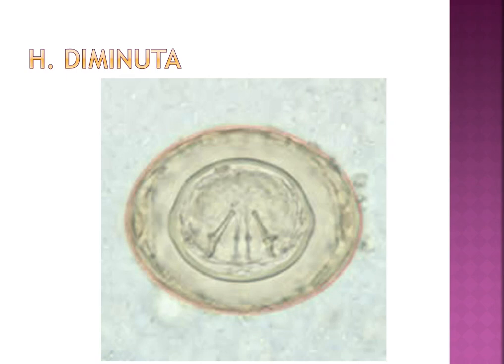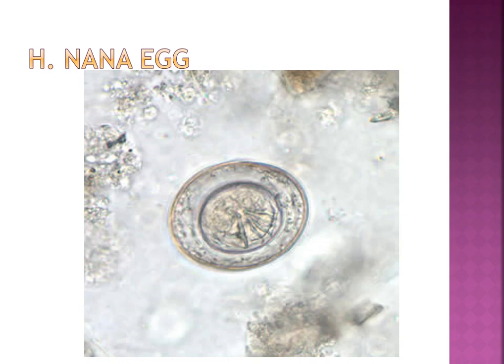Hymenolepis diminuta has a hexacanth embryo with polar thickenings at opposite ends, no polar filaments, four suckers, a rostellum but no hooks. Transmitted by contaminated rat droppings via the grain beetle or flea. H. nana has polar thickenings and filaments, hexacanth embryo, four suckers, short rostellum, and one row of hooks. It has a sac-like uterus filled with eggs. It's the most common tapeworm in children's nurseries in the southeastern United States — the dwarf tapeworm.